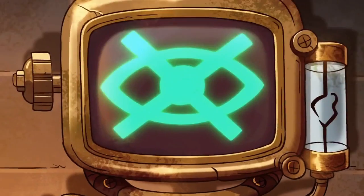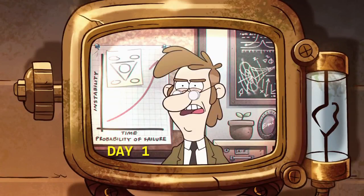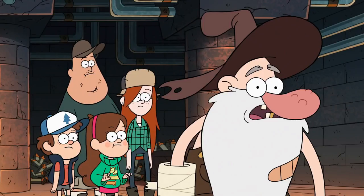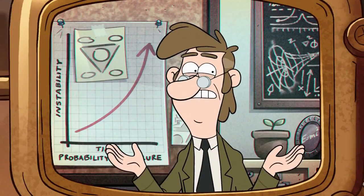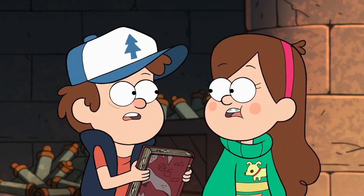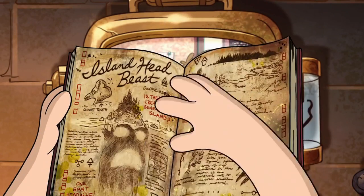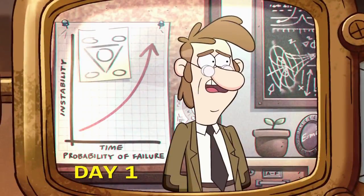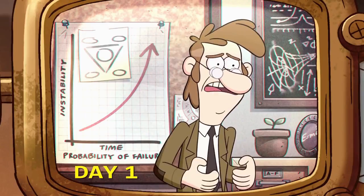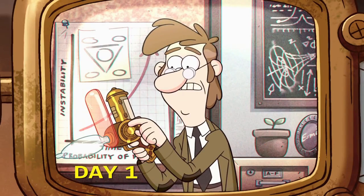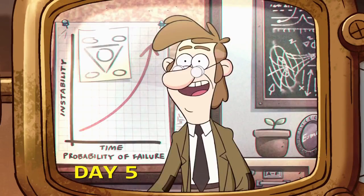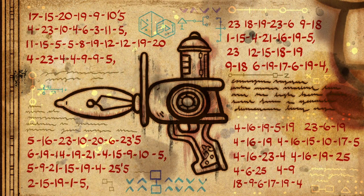McGucket also mentions in Society of the Blind Eye, when they're watching his memory reel, that something went wrong, and presumably he felt uncomfortable with the situation. Now we're going to move on into the Society of the Blind Eye connection, because I think the portal and the Society are tightly linked. I believe Bill actually convinced McGucket to create the mind-wiping device — some sort of idea planting — using McGucket's guilt and fear about the situation. He felt guilty, and Bill used that to convince him to create this mind-wiping device.